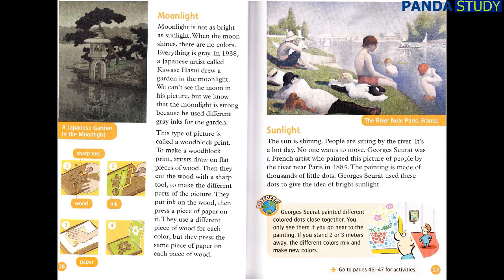Sunlight. The sun is shining. People are sitting by the river. It's a hot day. No one wants to move. Georges Seurat was a French artist who painted this picture of people by the river near Paris in 1884. The painting is made of thousands of little dots. Georges Seurat used these dots to give the idea of bright sunlight. Discover. Georges Seurat painted different colored dots close together. You only see them if you go near to the painting. If you stand two or three meters away, the different colors mix and make new colors.